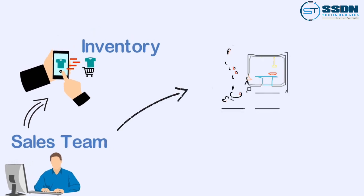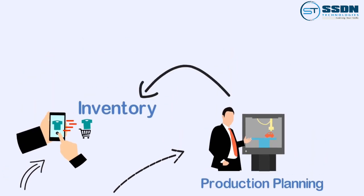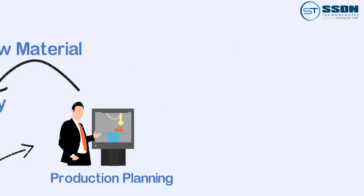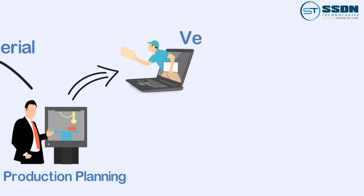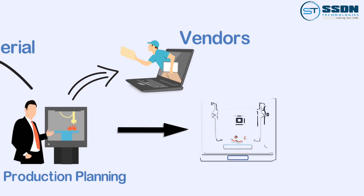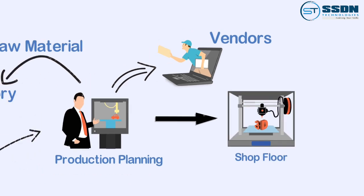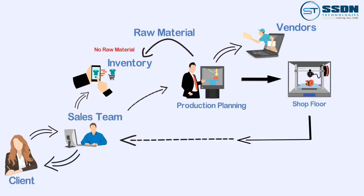In case the product is out of stock, the sales team approaches the production planning department to manufacture the product. The production planning team checks the inventory department for the availability of raw material. If the raw material is not available, the production planning team buys it from the vendor, then forwards it to the shop floor for actual production. Once ready, the shop floor sends the product to the sales team, which delivers it to the client.